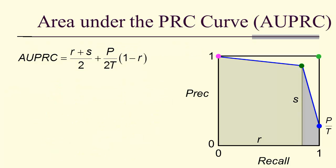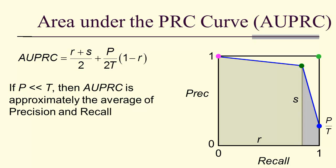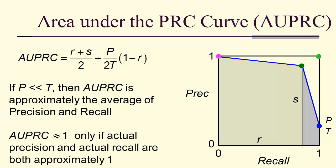Now, what's significant about this is that the area under the precision recall curve is especially significant when we have P much smaller than T, the opposite case of the receiver operating characteristic. In particular, if P is much less than T, then we simply have R plus S over 2, the average of the precision and recall. That means we can only get close to 1 if the actual precision and actual recall are both themselves approximately 1.